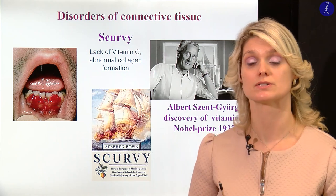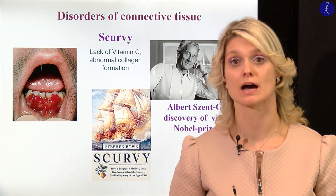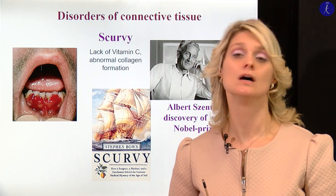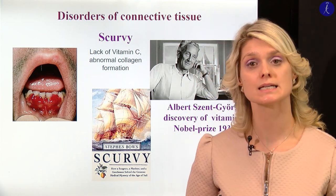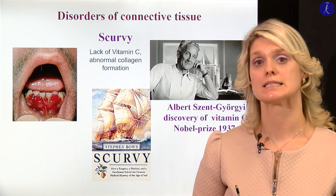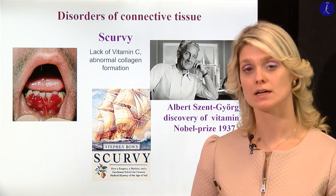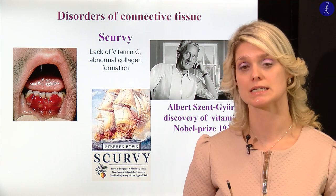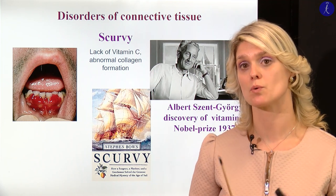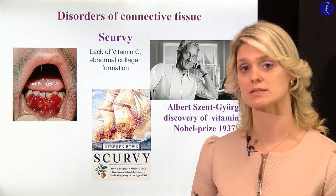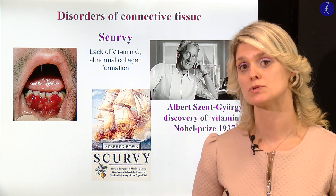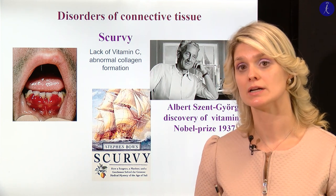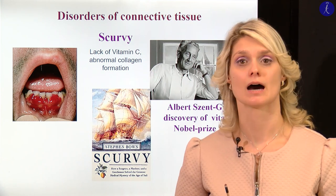Albert Szent-Györgyi is a really famous Hungarian scientist. He worked at Szeged University, and we are so proud because this Nobel Prize was made here in Hungary.